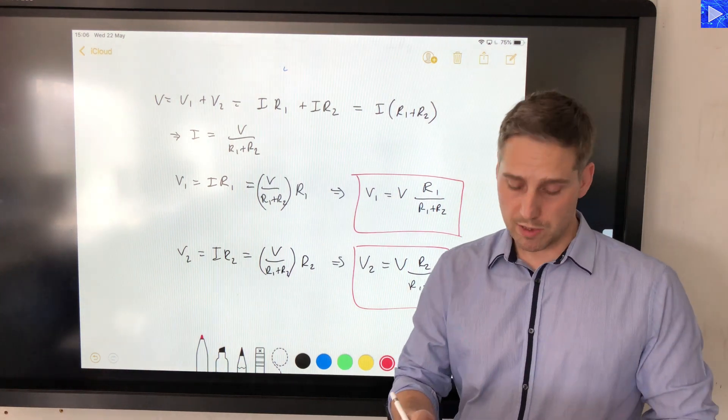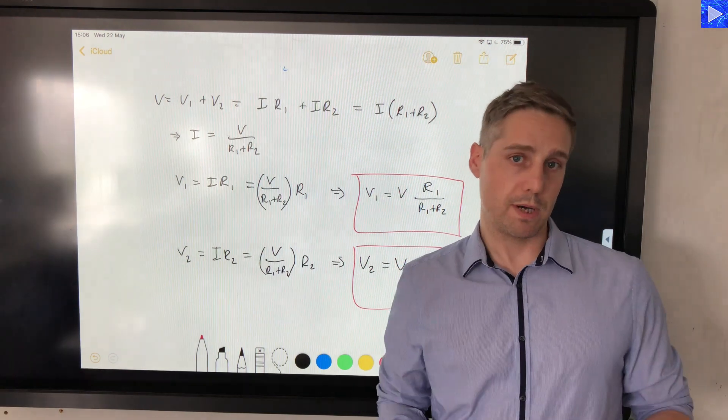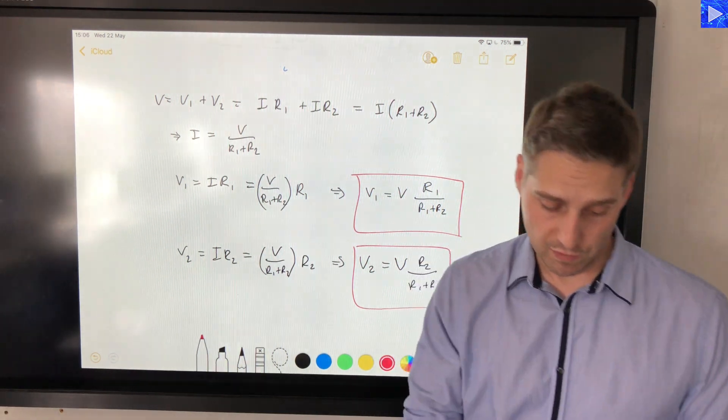So there you go, there's your potential divider equation. It's the resistor of interest divided by the total resistance multiplied by the input voltage. That's your potential divider.